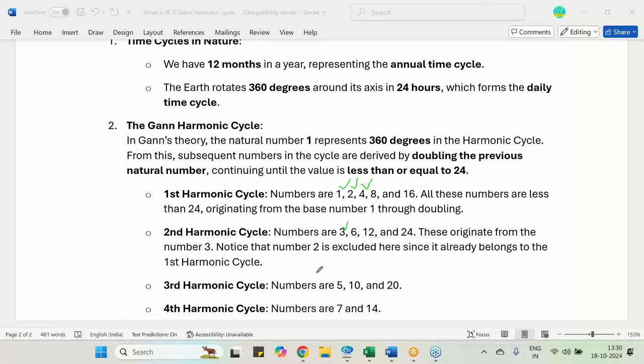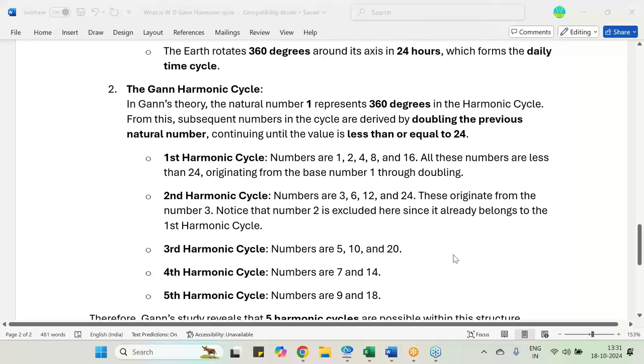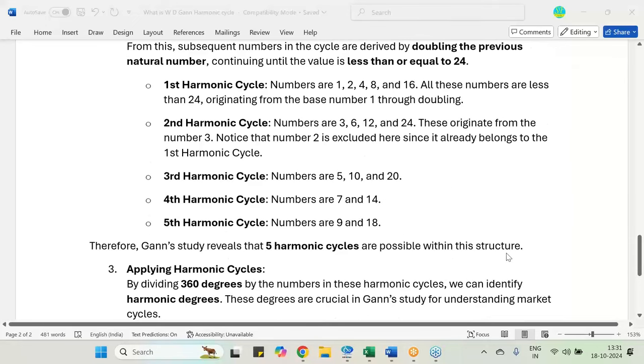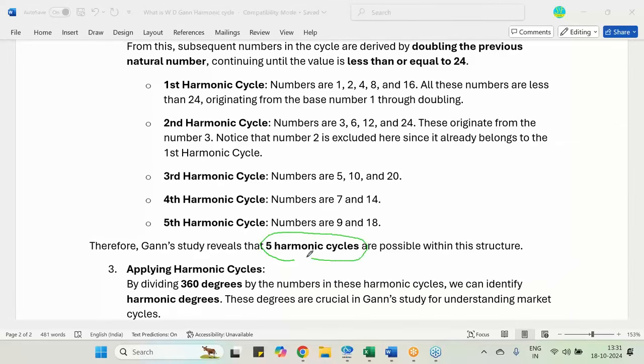We are missing with number 5. So the third harmony will start from number 5, 10, 20. Beyond 20 it is 40, so we will be stopping here. So third harmony has 3 numbers: 5, 10, 20. Now coming to the fourth harmony, 7 and 14. Fifth harmony is 9 and 18.